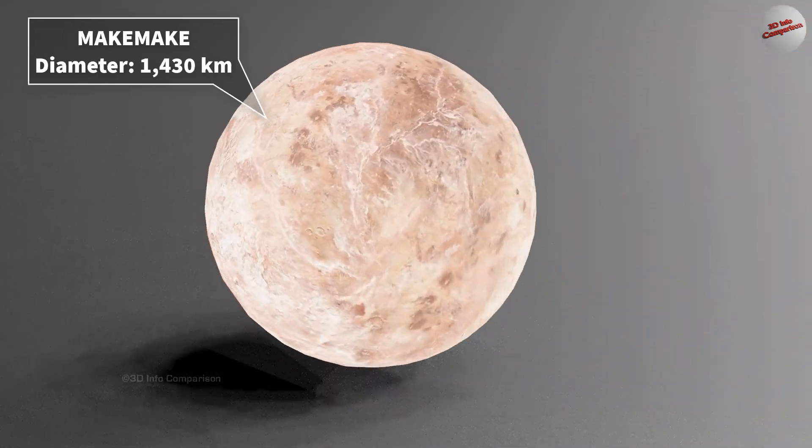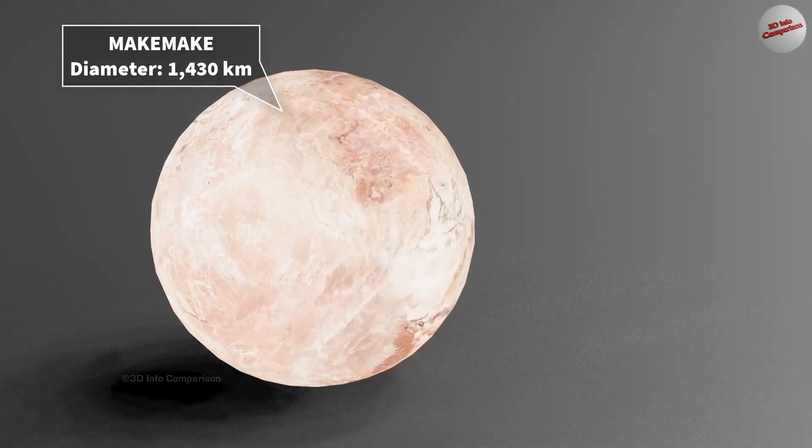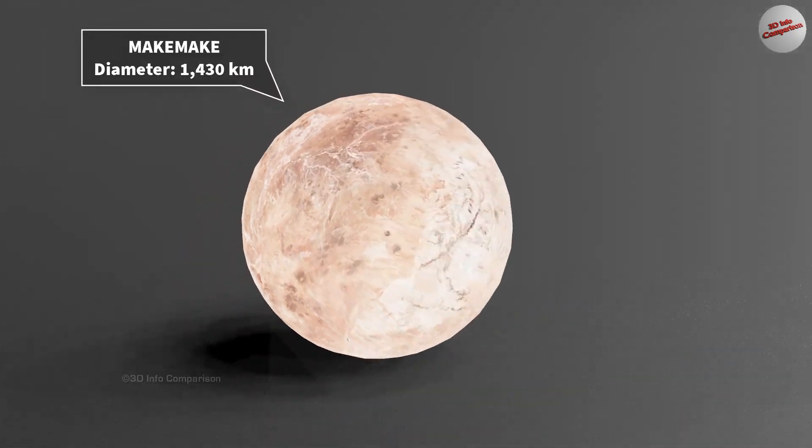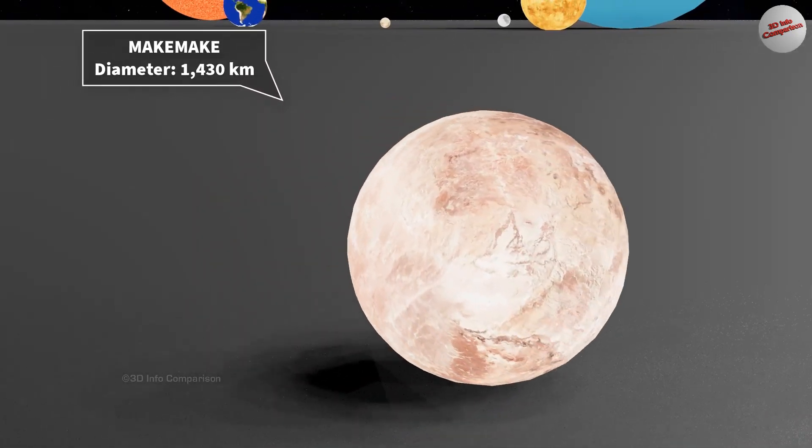Makemake is a dwarf planet, and the diameter is approximately 1,430 kilometers. Earth is more than eight times larger than Makemake.